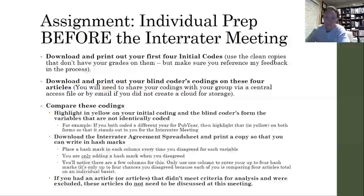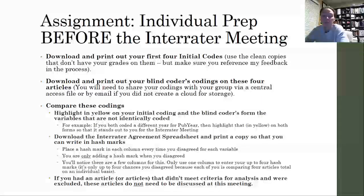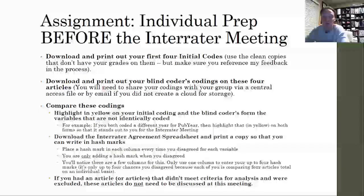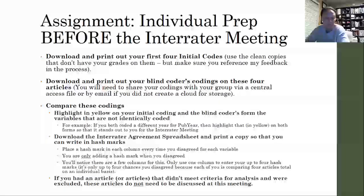Each of you individually is going to fill out the spreadsheet based on the four articles you are comparing before the meeting. It may be helpful for your group to fill out the Inter-rater Agreement Spreadsheet with your variables and share the blank spreadsheet with everyone. Download a copy individually and place a hash mark in each column for every variable every time you disagreed. You're only going to add a hash mark in the spreadsheet when you disagreed on a code. When doing this one-on-one before the meeting, you're only going to be using up to one column by yourself because you're comparing four codes, and each column only accounts for five hash marks max. The most times you could disagree individually is four.